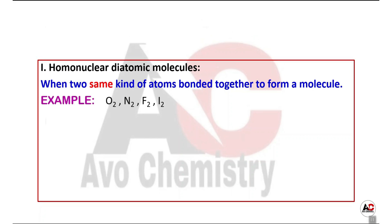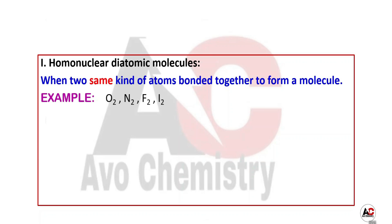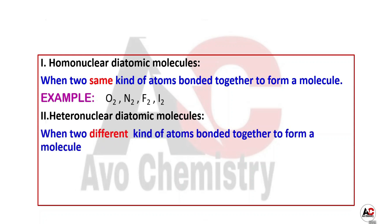In heteronuclear molecules, the atoms are different. For example, carbon monoxide CO - two atoms are joined together but these two atoms are different, carbon is different and oxygen is different.